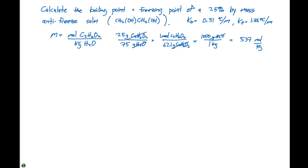So in terms of each of these, we can say that the delta TB is going to equal KB times M. And we also know that the delta TF is going to equal KF times M. So all we need to do here is put in our values that we've been given in this particular problem.